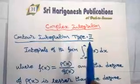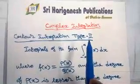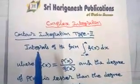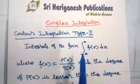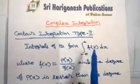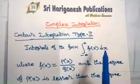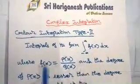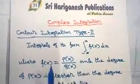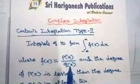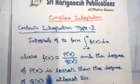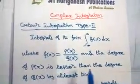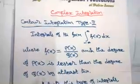Contour integration type 2. Integrals of the form integral minus infinity to plus infinity of f(x) dx, where f(x) equals p(x) divided by q(x), and the degree of p(x) is lesser than the degree of q(x) by at least 2.